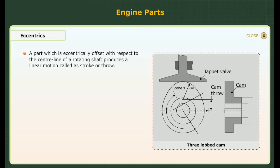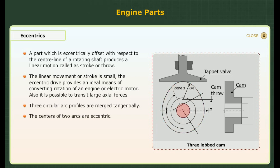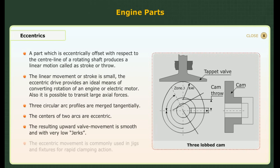With respect to the center line of a rotating shaft, eccentrics reduce a linear motion called stroke or throw. Where the linear movement or stroke is small, the eccentric drive provides an ideal means of converting rotation of an engine or electric motor, and it is also possible to transmit large axle forces. In the three-lobed cam, three circular arc profiles are merged tangentially; the centers of the two arcs are eccentric. The resulting upward valve movement is smooth and with very low jerks. The eccentric movement is commonly used in jigs and fixtures for rapid clamping action.